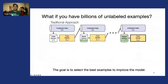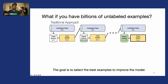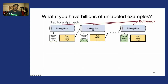In all these cases, doing active learning will help us identify the best examples to improve our model out of this massive pool of unlabeled data. But when we think about billions of unlabeled examples, the bottleneck becomes actually processing all of that unlabeled data.